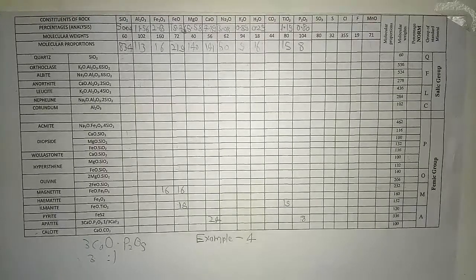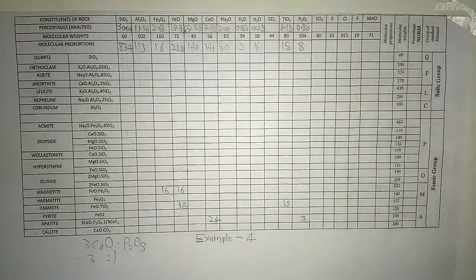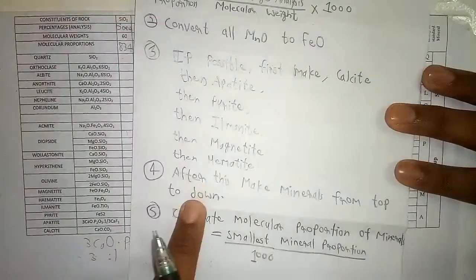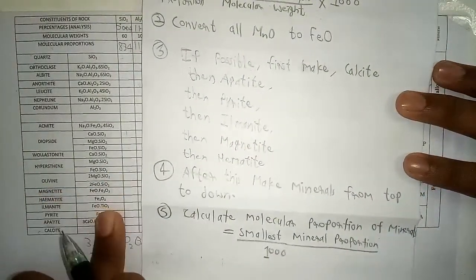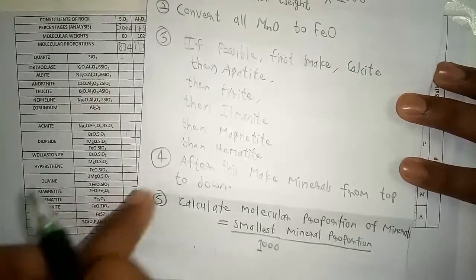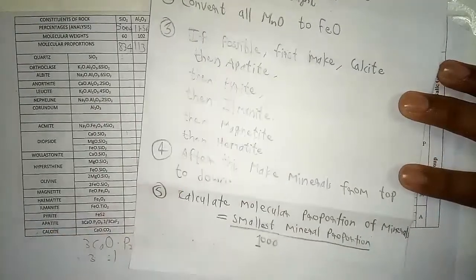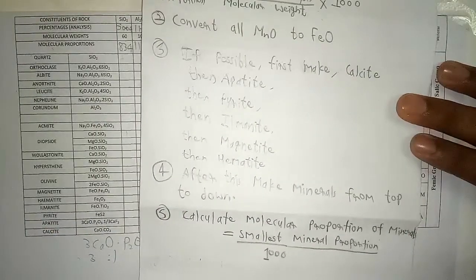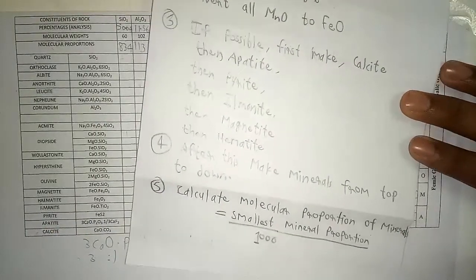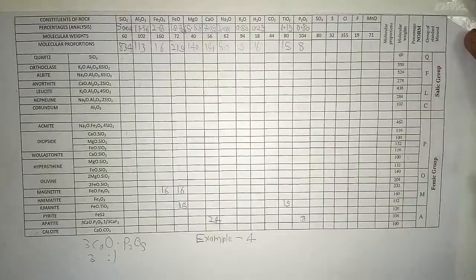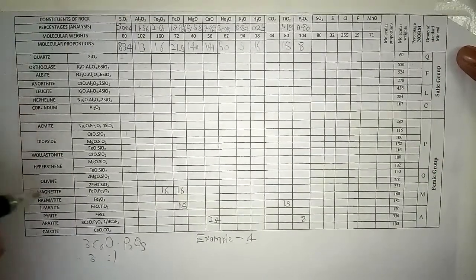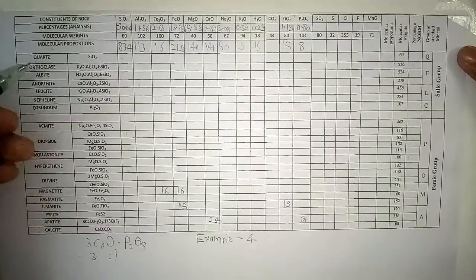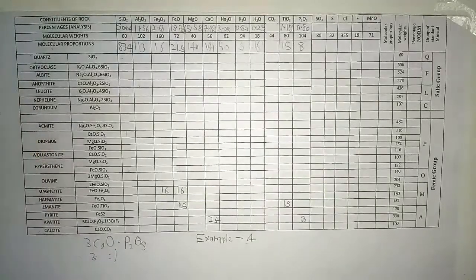After magnetite we check hematite — we cannot make hematite because Fe2O3 is already fully used in magnetite. So we move to Step 4: make minerals from top to bottom, starting from orthoclase. Quartz is always at the very last position.